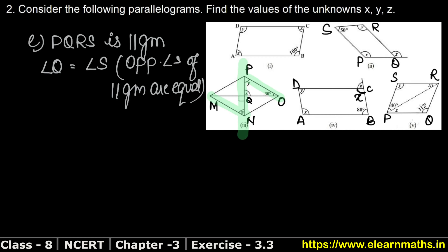Now angle Q is 112 degrees and angle S is y, so y equals 112 degrees. Now if we look at triangle PSR, the triangle has an angle of 40 degrees at P. We know that the sum of the three angles of a triangle is 180 degrees — angle sum property.